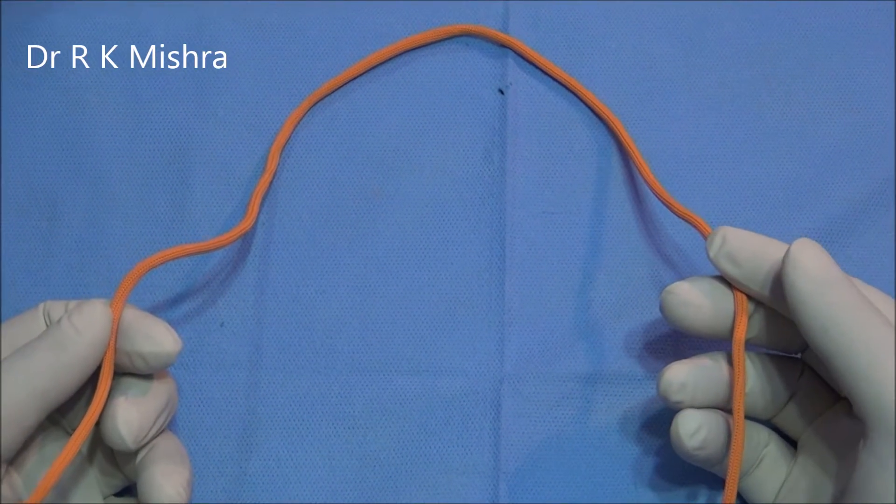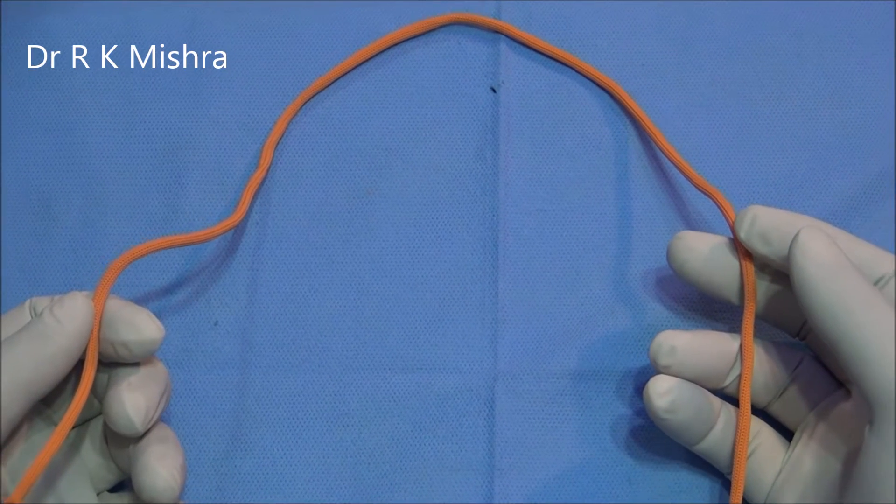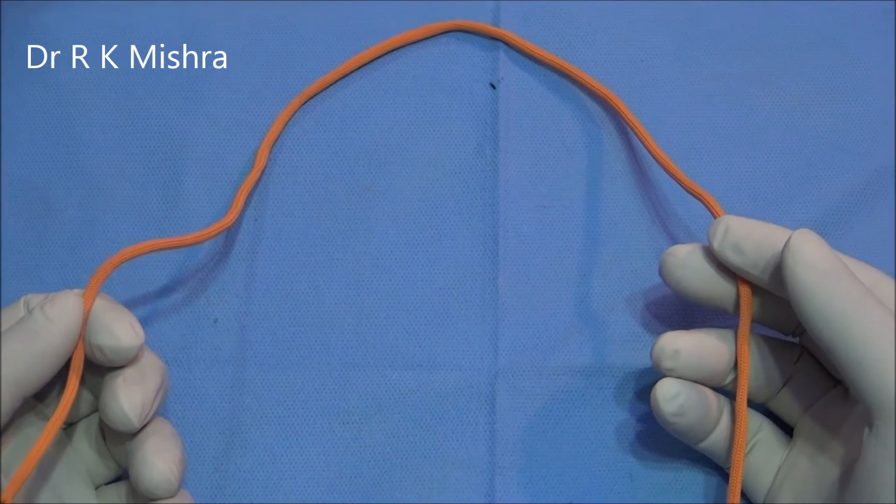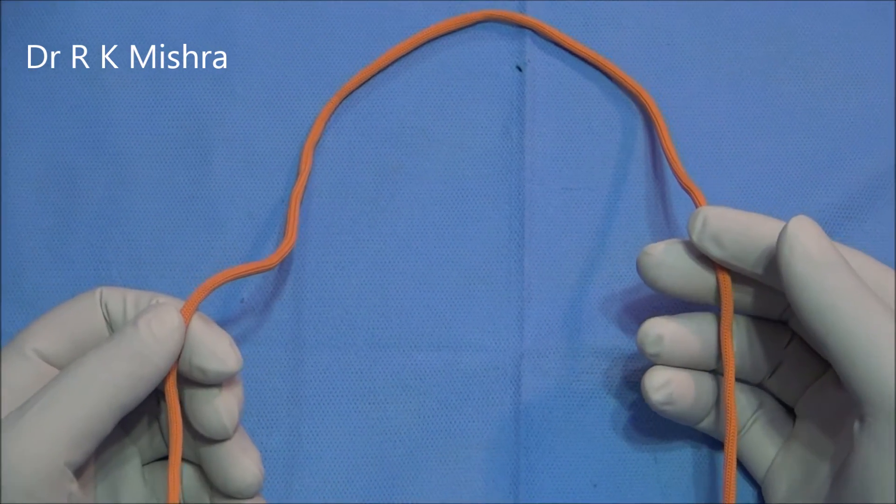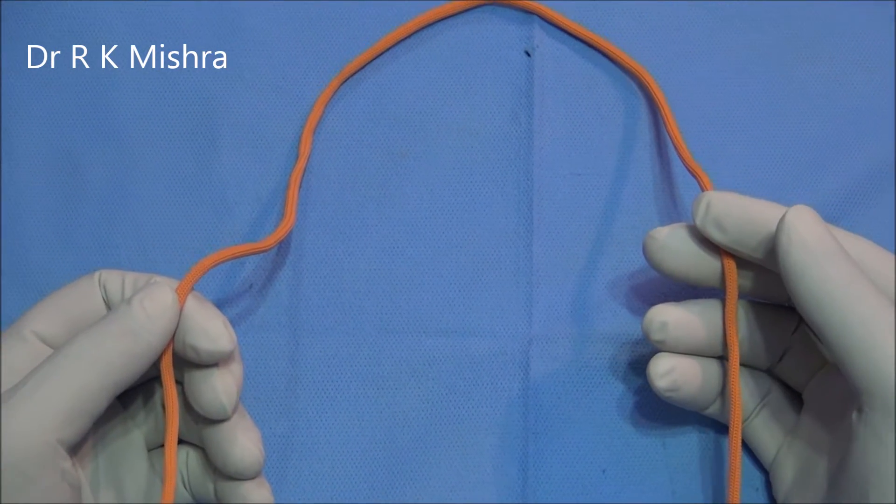How to tie the Western Knot. The Western Knot is a beautiful extra-corporeal knot. This knot can be slid without a knot pusher, with the help of Maryland.